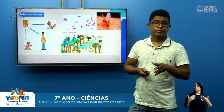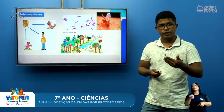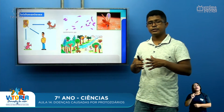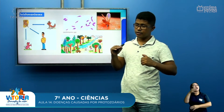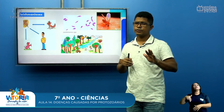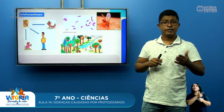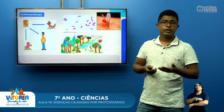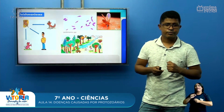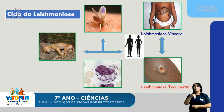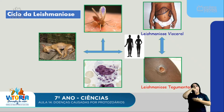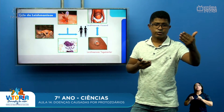A Leishmania e os mosquitos-palha vivem dentro de florestas. Pessoas que gostam de entrar na mata, fazer caminhada, trilha ou caçar podem ser picadas por esses mosquitos e adquirir a leishmaniose. A Leishmania ataca as células de defesa do corpo e pode ir ao mosquito, que transmite para outras pessoas, tanto seres humanos quanto animais.